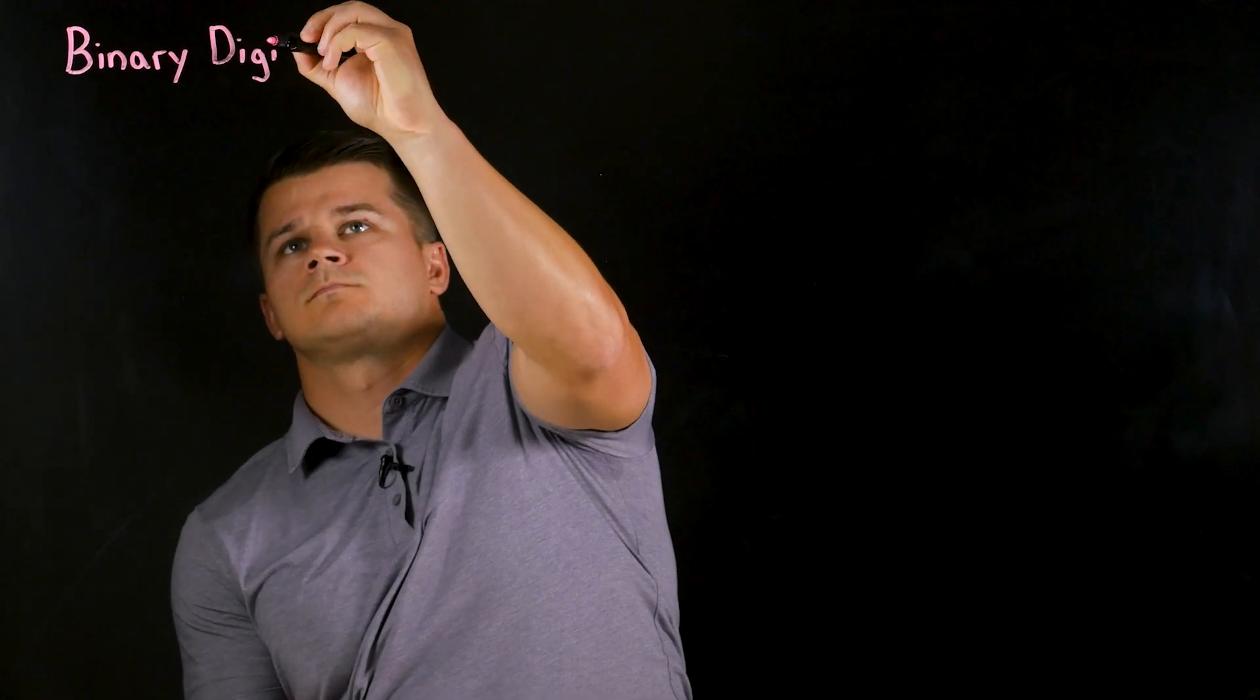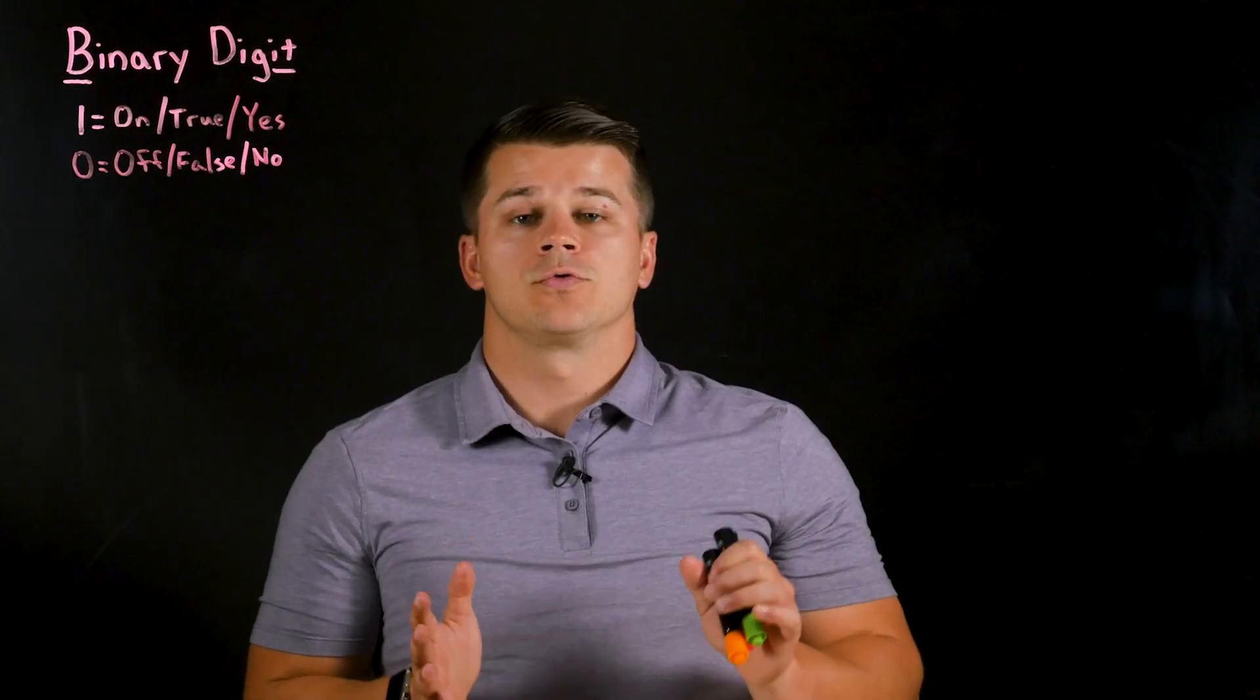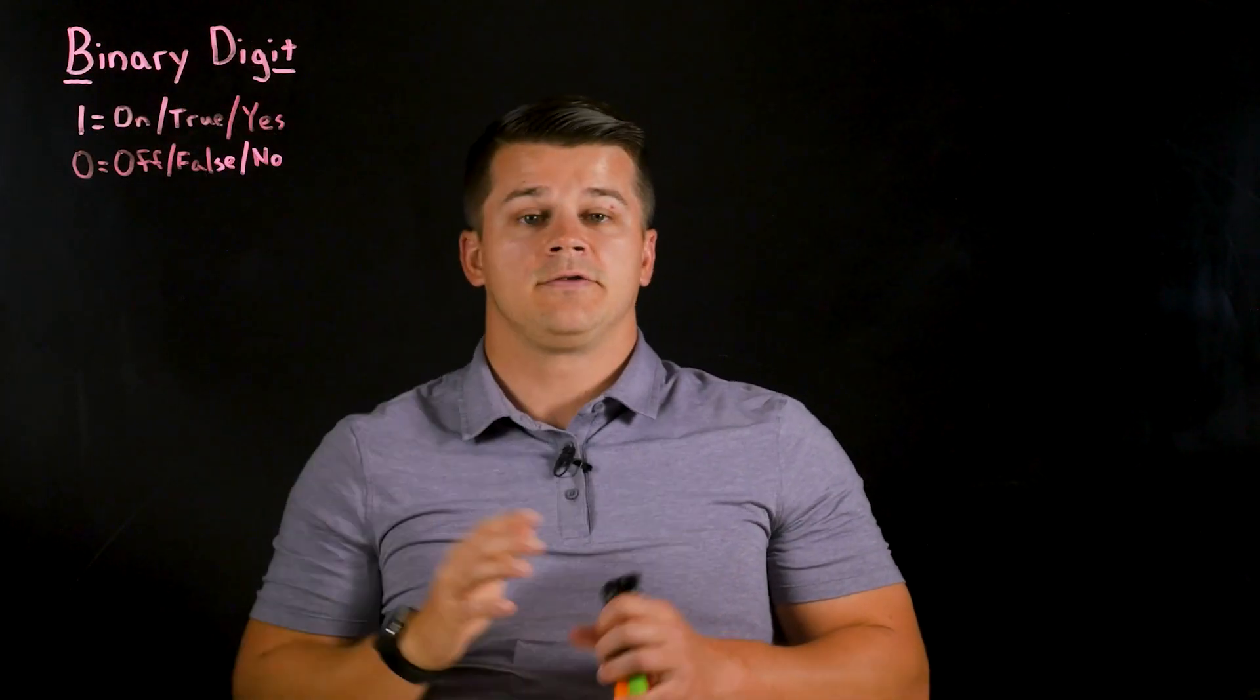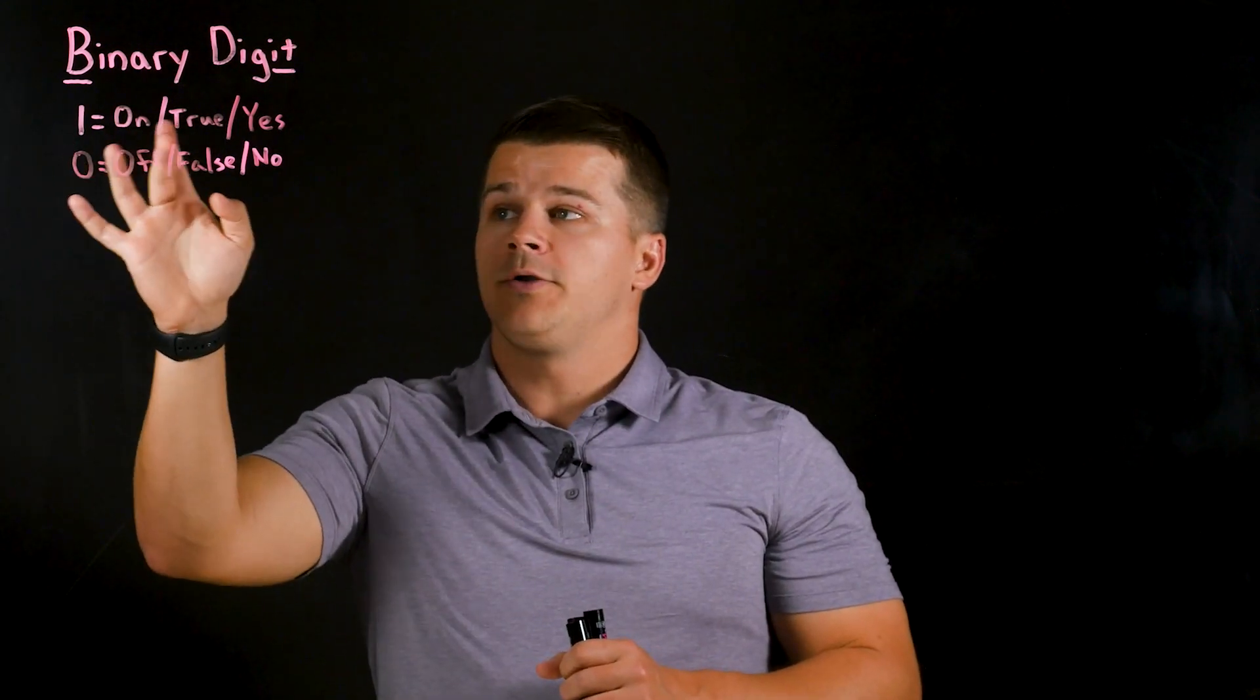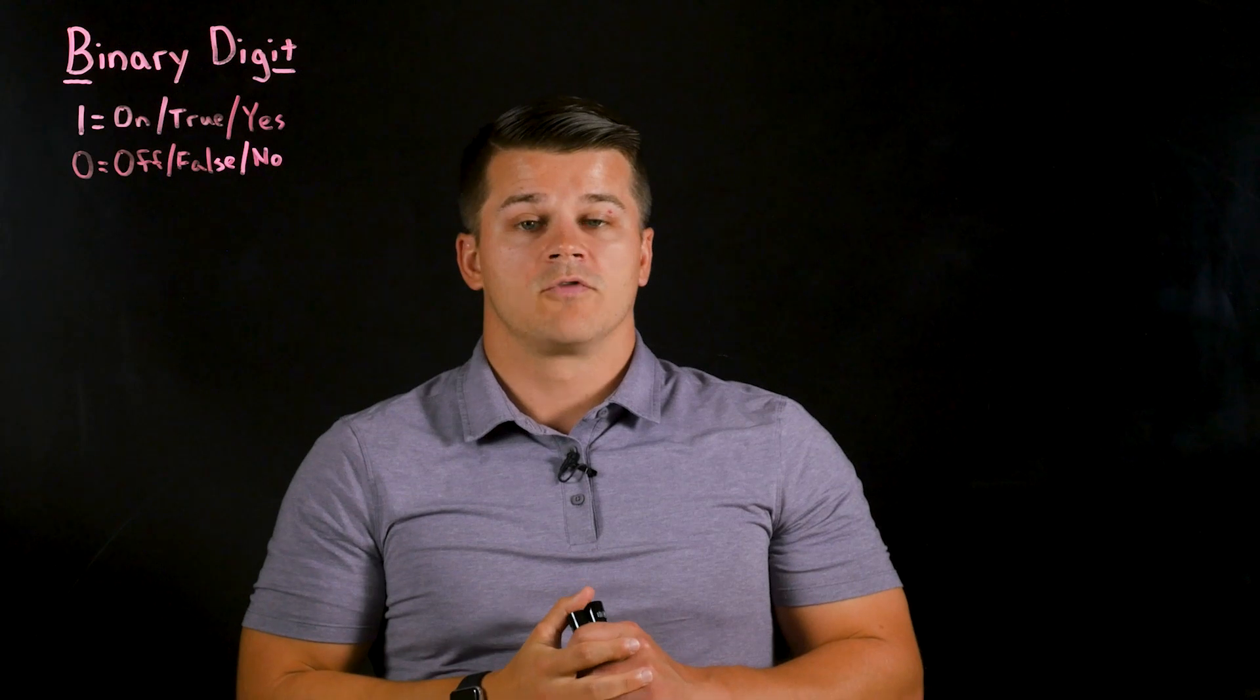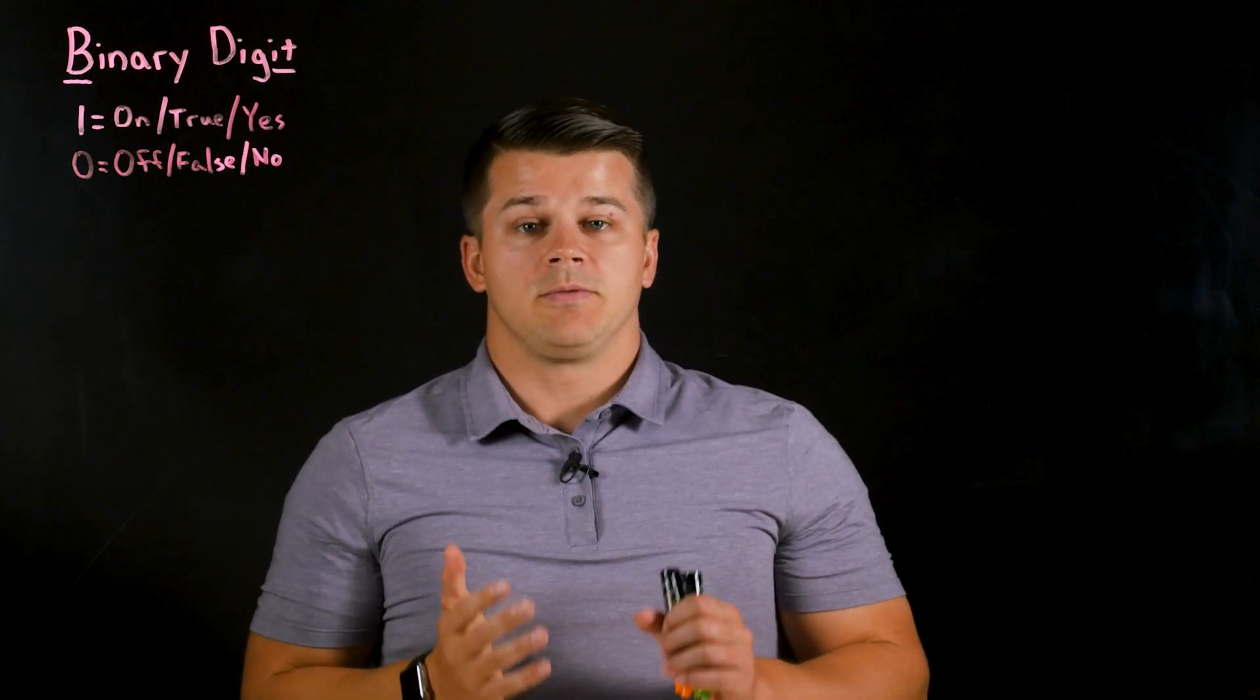A bit is the most basic form of computing digital communication and is crucial to understanding fieldbus communication. A bit is shortened from binary digit and is simply a stored one or zero. A one typically refers to on, true, or yes, while a zero refers to off, false, or no. From this very basic one or zero, complex communication can be built.